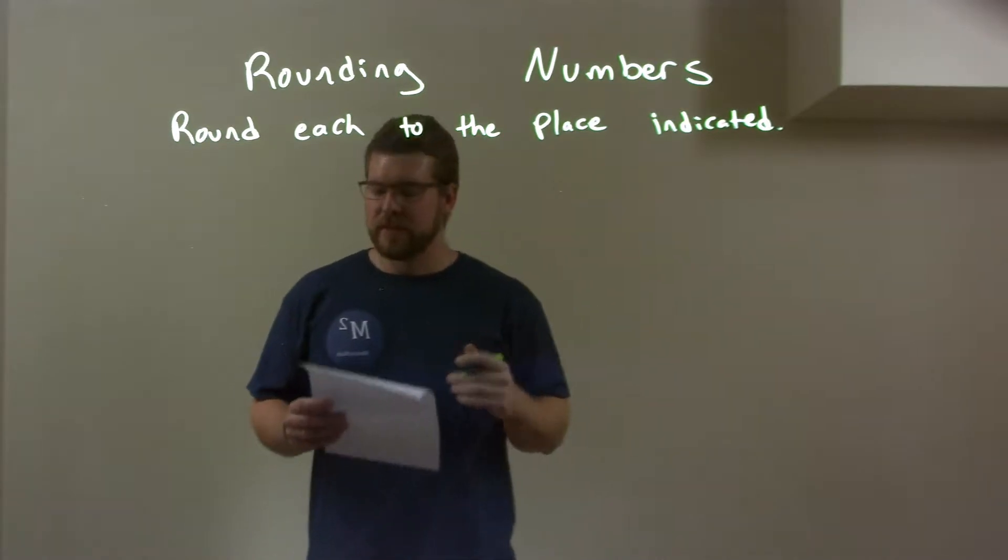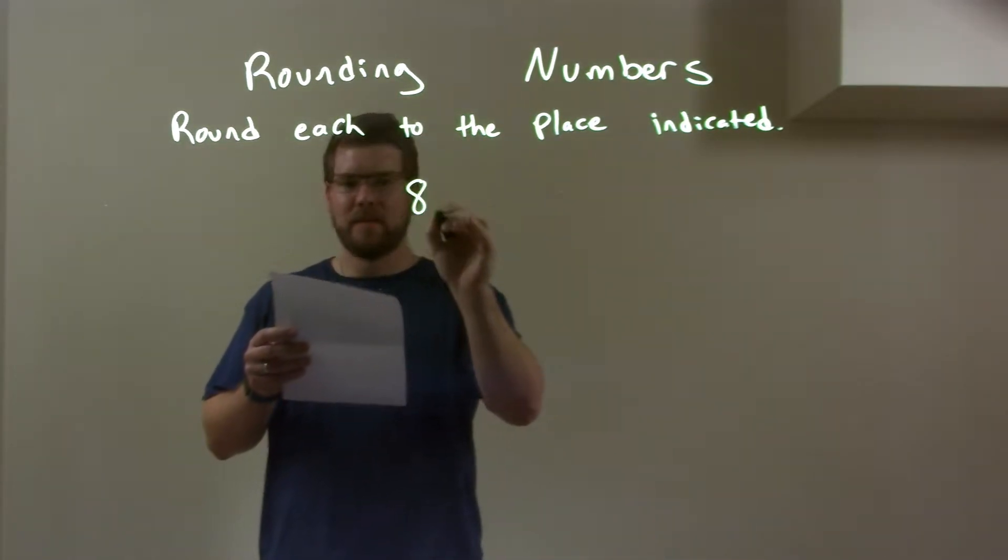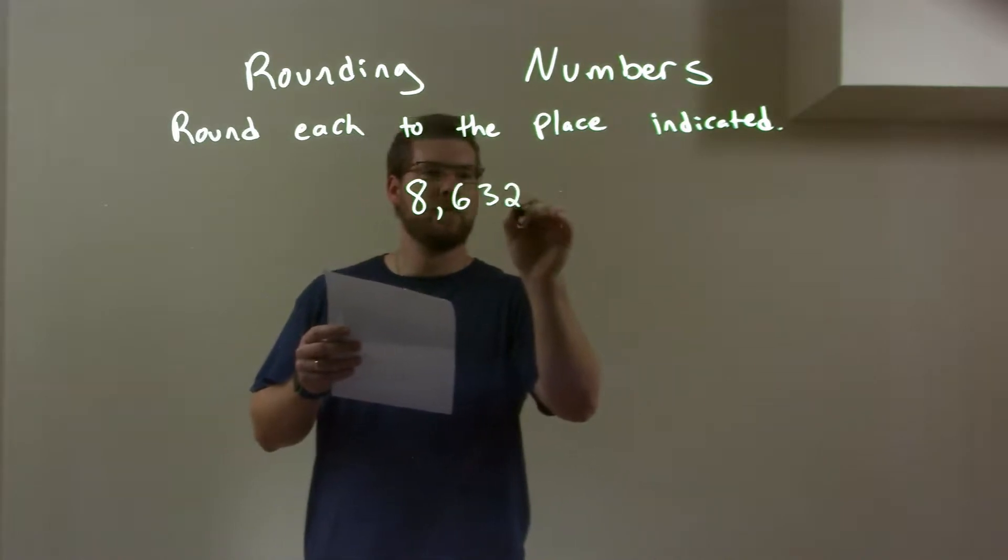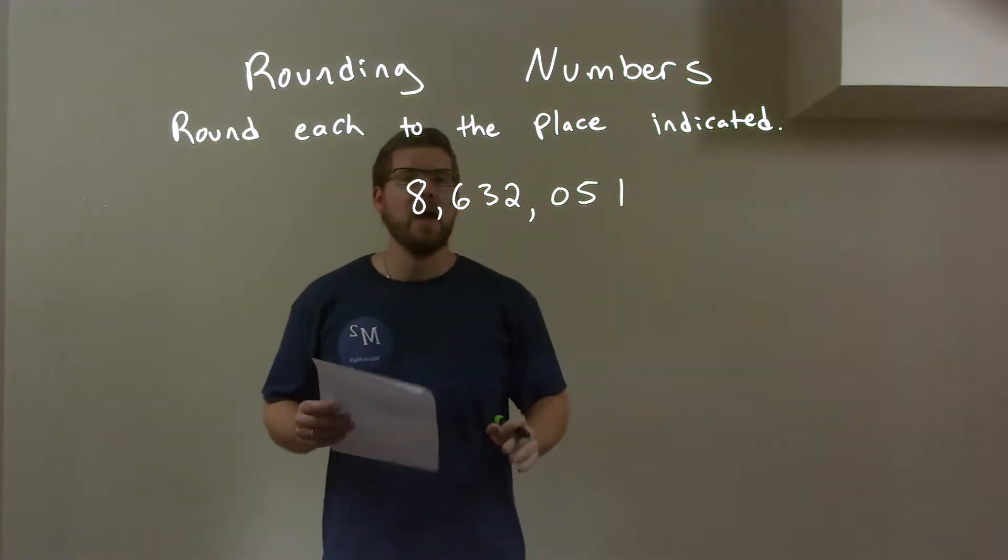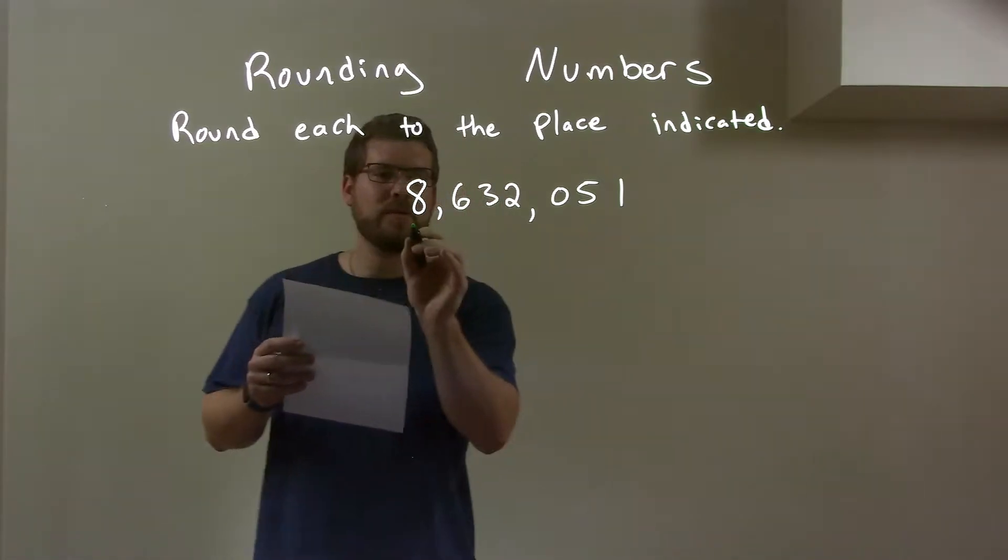So, if I was given this number, we have 8, 6, 3, 2, 0, 5, 1. And we have to round it to the indicated place, which is right here.